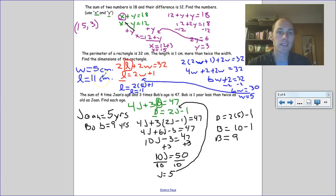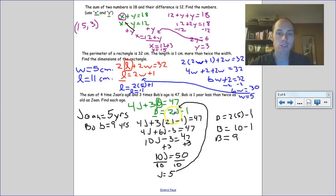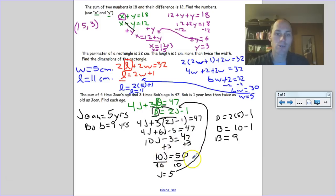The third problem: the sum of 4 times Joan's age and 3 times Bob's age is 47, so 4j plus 3b equals 47. Bob is one year less than twice Joan's age, so b equals 2j minus 1. Since b is isolated, substitute: 4j plus 3(2j minus 1) equals 47. Distributing and combining gives 10j equals 50, so j equals 5. Then b equals 2(5) minus 1 equals 9. Bob is 9 and Joan is 5.